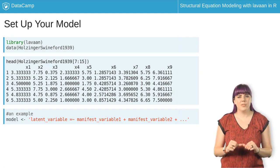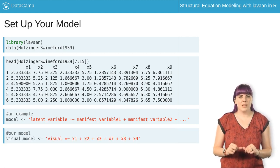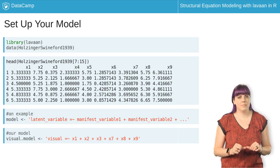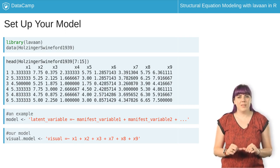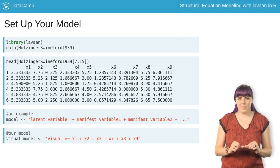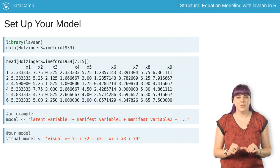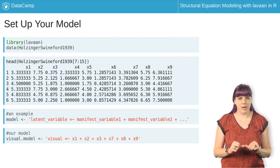Last, you will use the names of the columns in the dataset to define the items related to the latent variable. These item names must match names in the data frame and be spelled exactly the same. You will use plus signs between them in a similar fashion to how a regression model is defined.